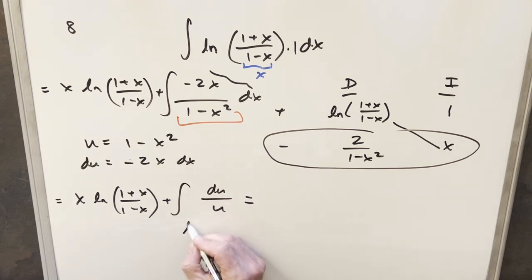So when we integrate this, this is just going to become natural log of u. So let's back substitute with this all in one step and finish it off.